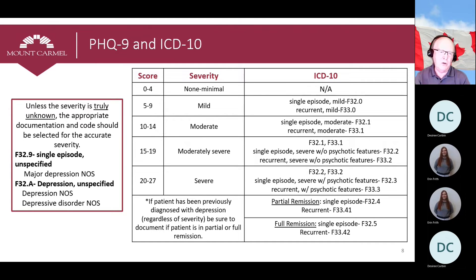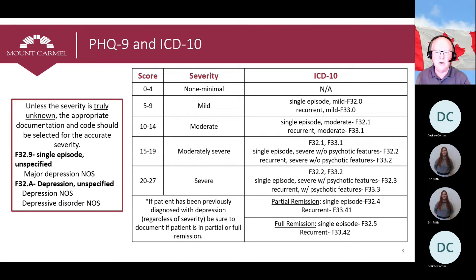F32.9 and F32A are the ICD codes used for unspecified depression. When the severity is not specified, the condition is not risk-adjusted in the HCC model. Unless the severity of depression is truly unknown at the time of evaluation, there should always be documentation stating what severity of depression the patient has experienced. This will not only help with accurate documentation but also truly reflects the patient's burden of illness.